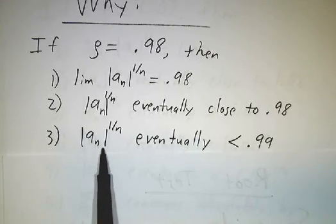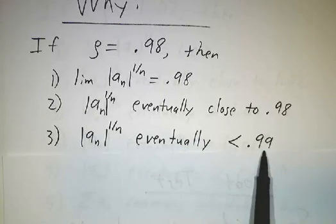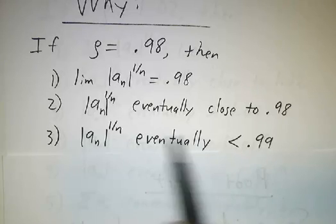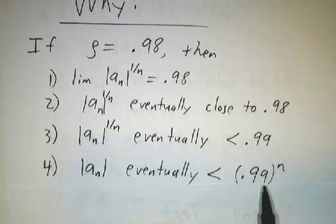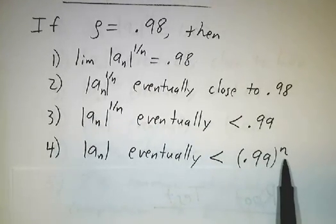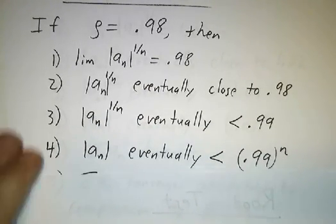And if an to the 1 over n is less than 0.99, take the nth power of both sides and you get that an is eventually less than 0.99 to the n. Well, that's what we want.